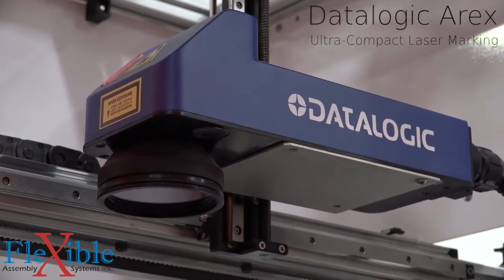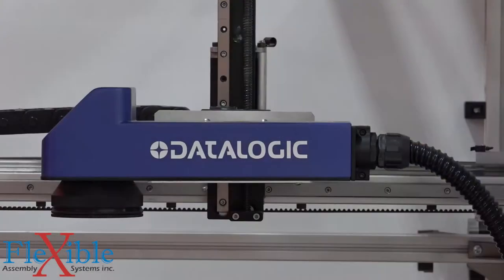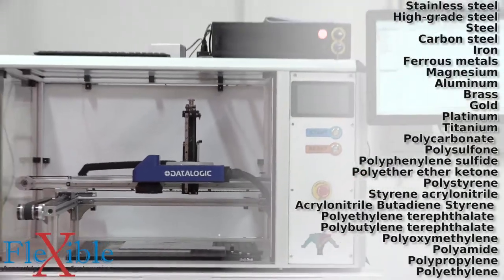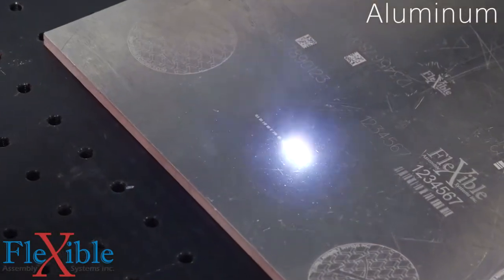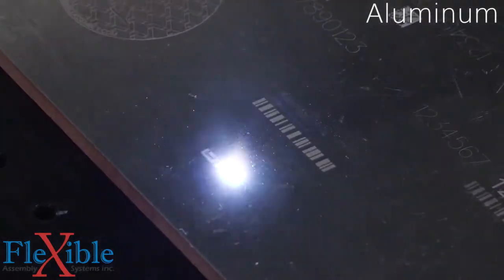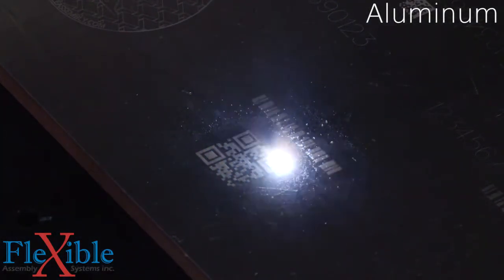This is the RX Laser Marker from DataLogic. The RX is an ultra-compact fiber laser marker which can perform high-precision, high-contrast permanent laser marking on a wide variety of metals and plastics for traceability, branding, or just to look cool.